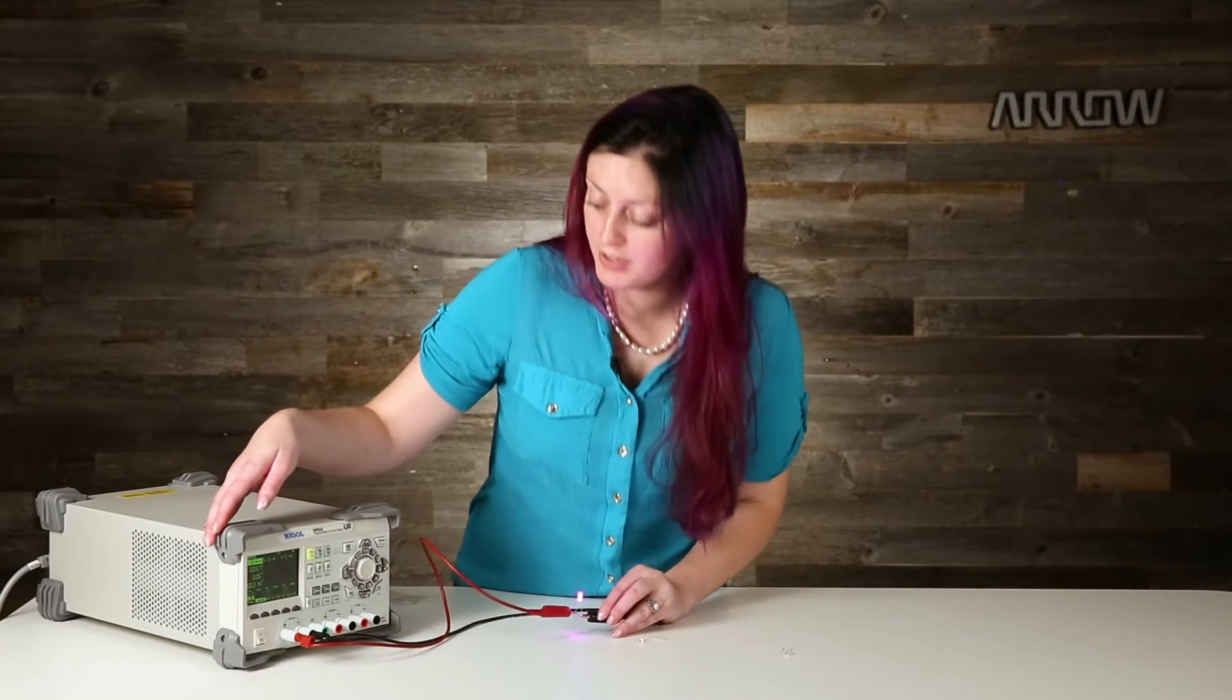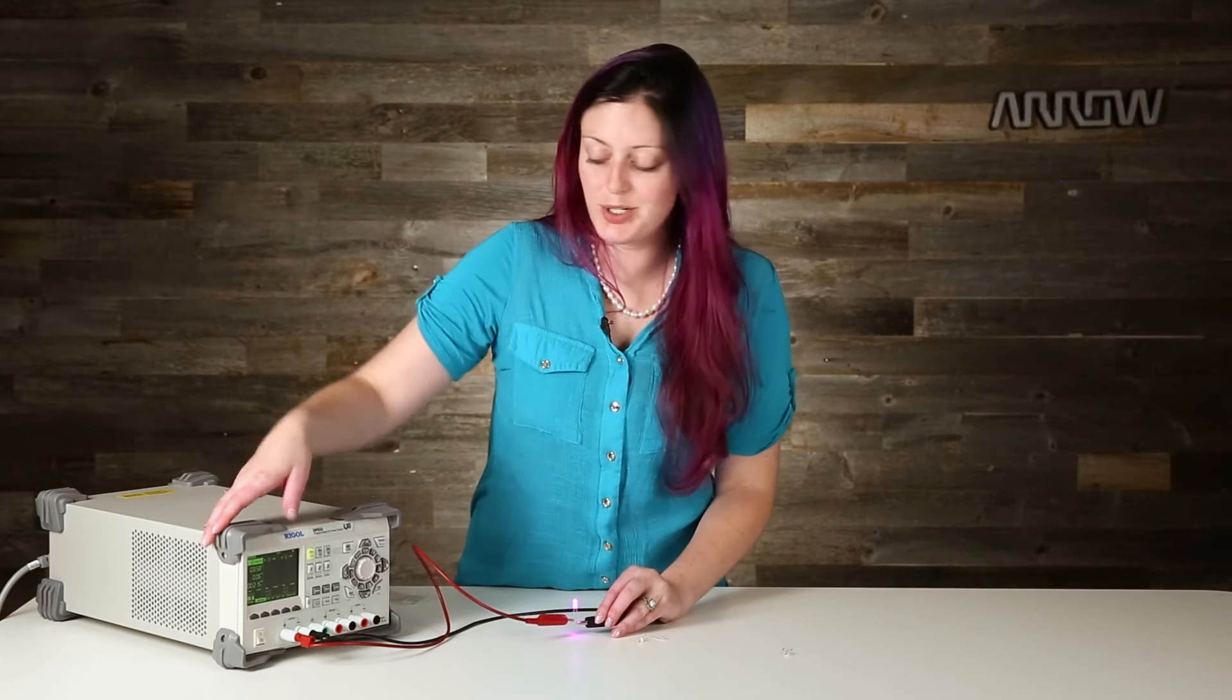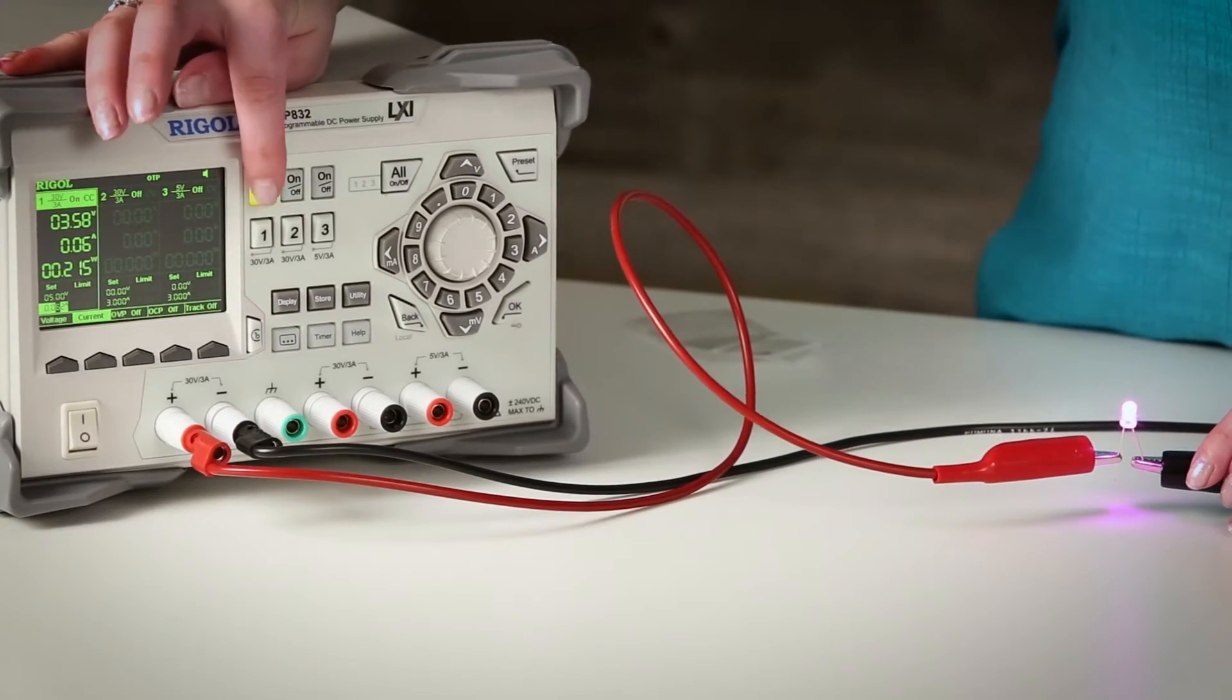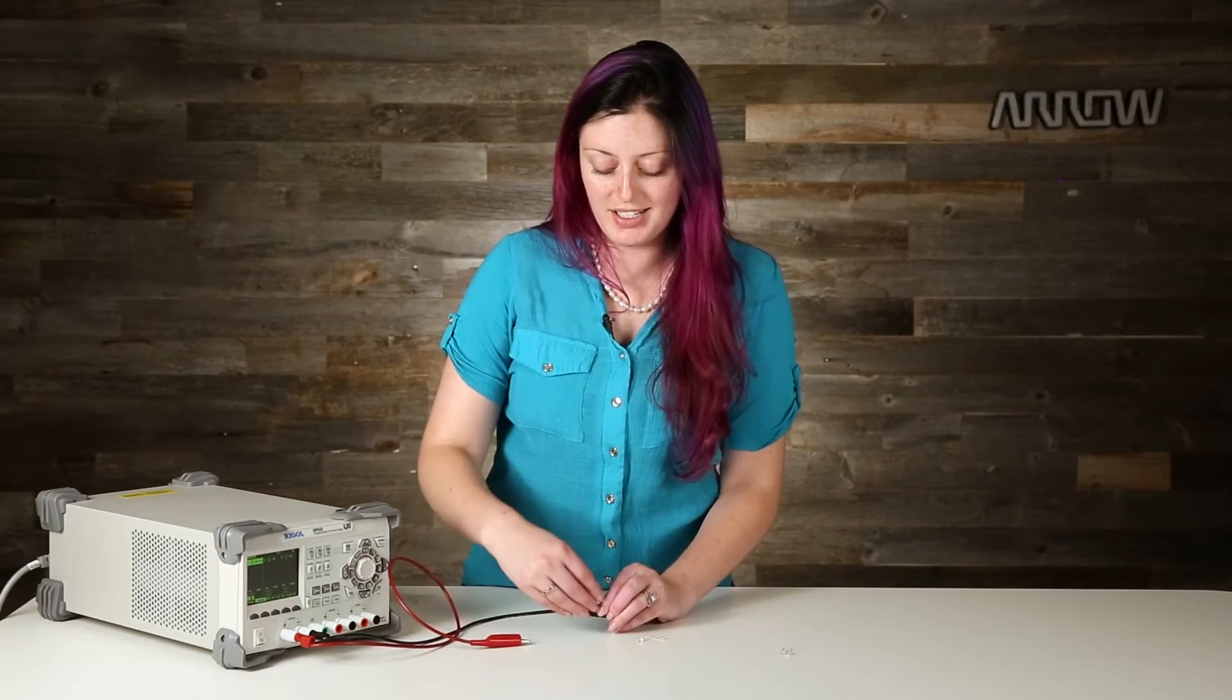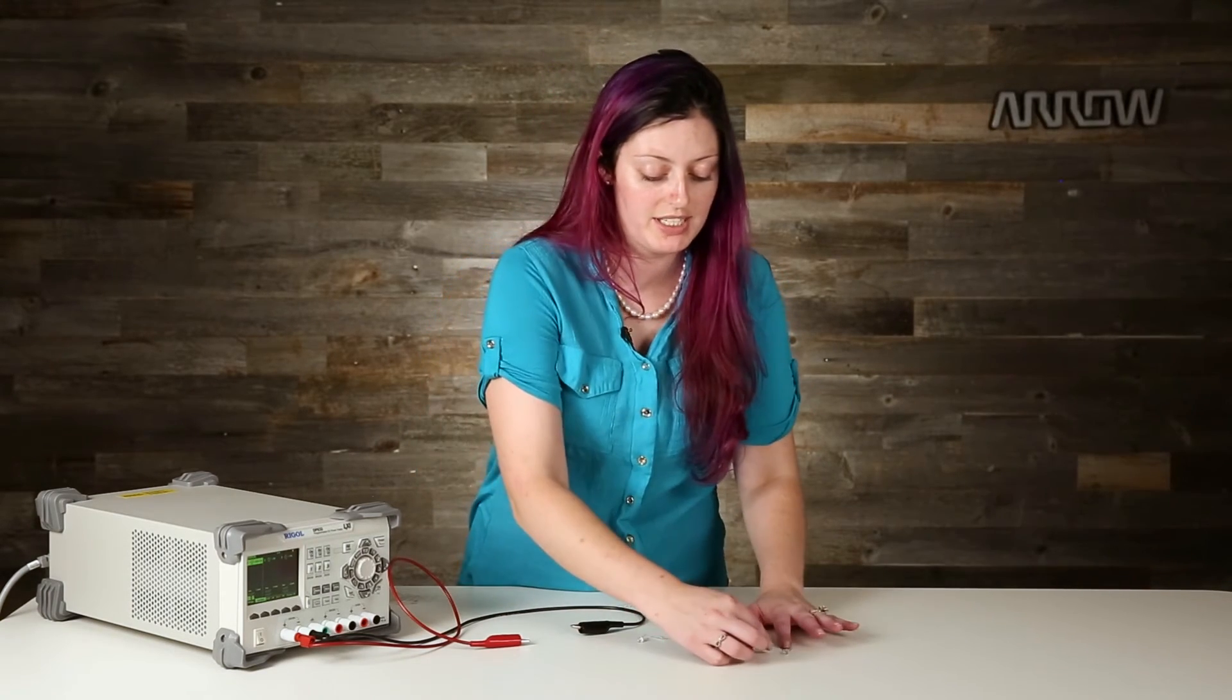This one, a different color, very different forward voltage. So you can see how it's actually kind of annoying to swap out colors mid-design because you have to go through and find different current limiting resistors in order to not hurt any of these LEDs.